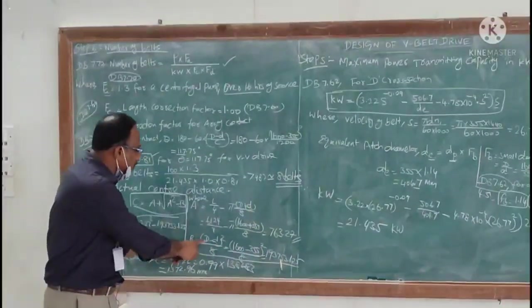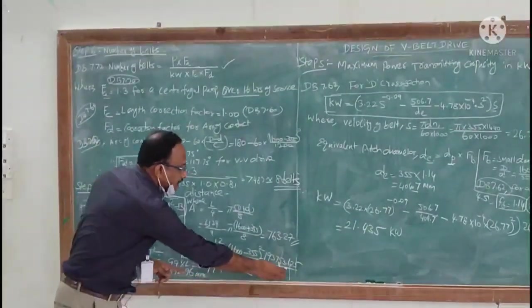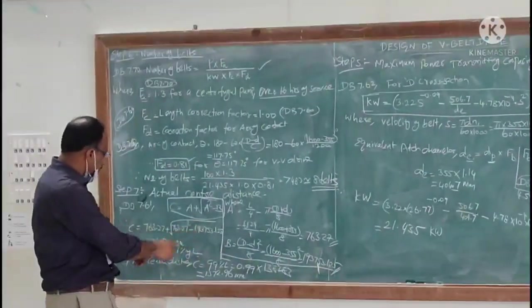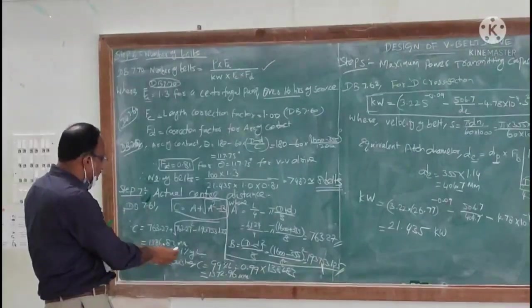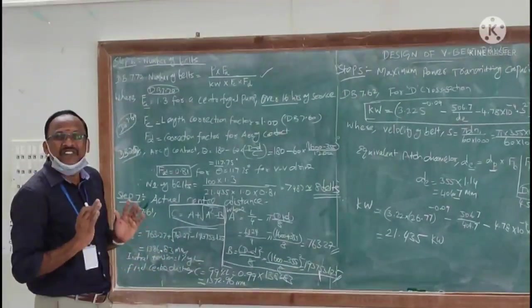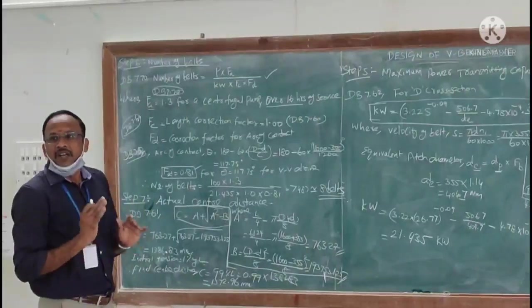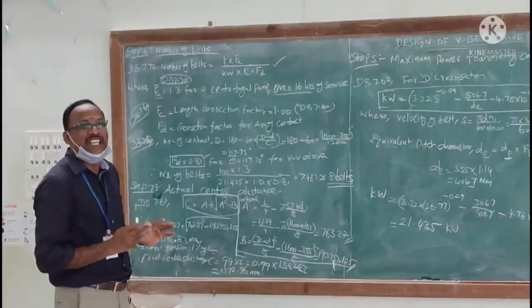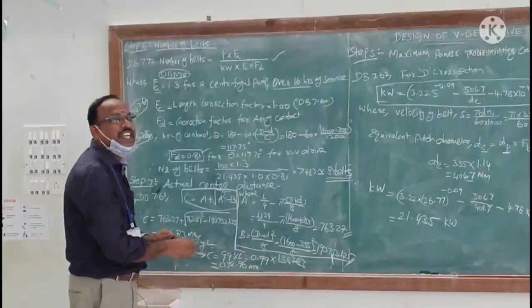Similarly, b value is (D minus d) squared by 8. This value we will get, we substitute all these values here, then we can get C value as 1386.83 millimeter.